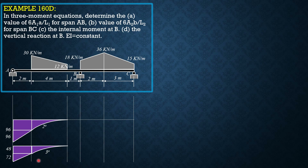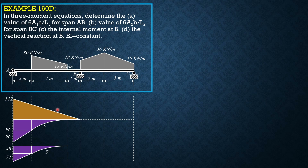At A as moment center, therefore 96 plus 96 plus 48 plus 72 gives the moment due to the reaction at B, which is triangular as shown, and it is equal to 312 over EI. But since EI is constant, let's just assume EI equals 1.